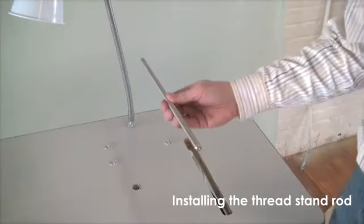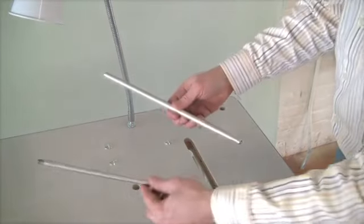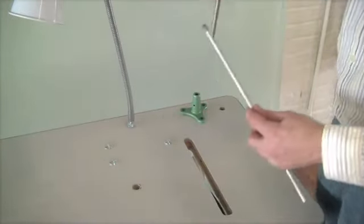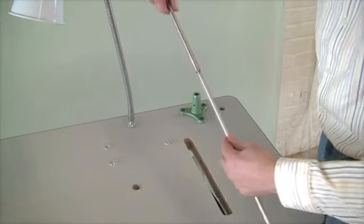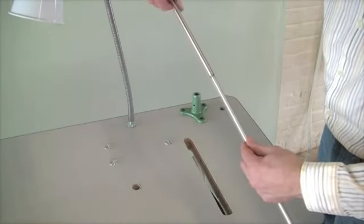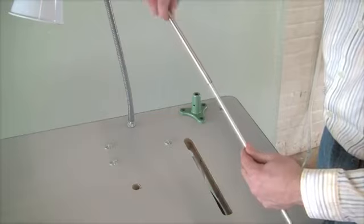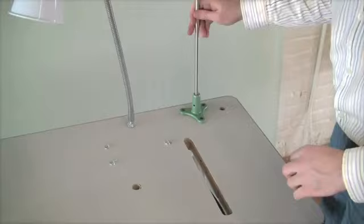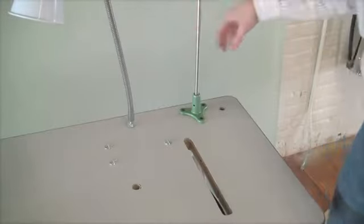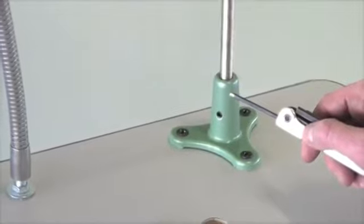You are now ready to install the threadstand support rod. To do so, begin by screwing the upper and lower halves together. When the halves are tightly connected, insert the thicker lower section into the threadstand base and lower it down until it rests on the sewing table. Secure the threadstand rod by tightening the set screw in the side of the threadstand base.